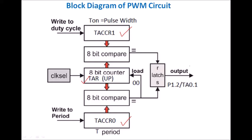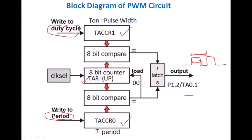The timer is used in up count mode. Whenever we want to generate a PWM signal, initially the output is at logic 1. The user has to load a count related to the width of the pulse in TACCR1 register — that is, the duty cycle count is loaded in TACCR1. The count related to the frequency of the PWM signal should be loaded in TACCR0. So the period count is loaded in CCR0 and the duty cycle count is loaded in CCR1.